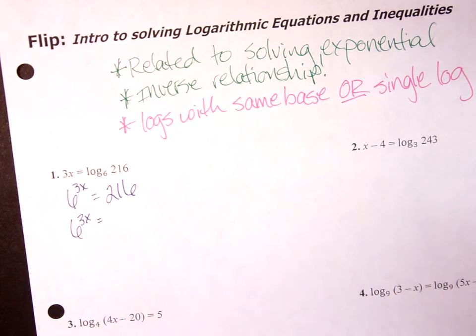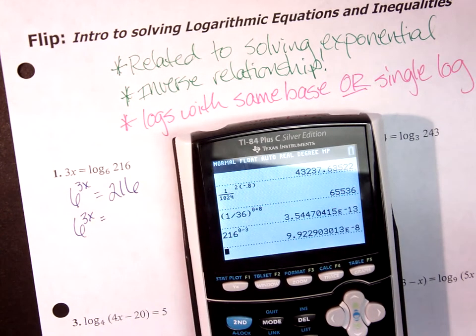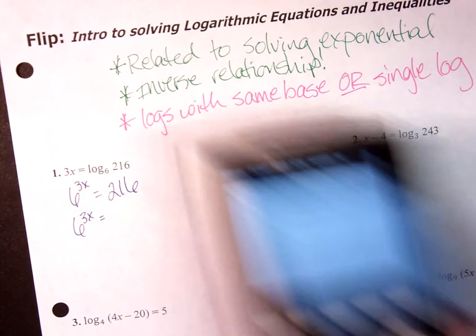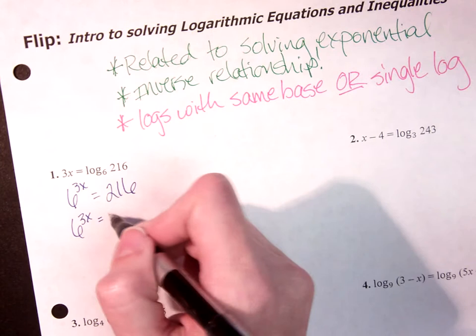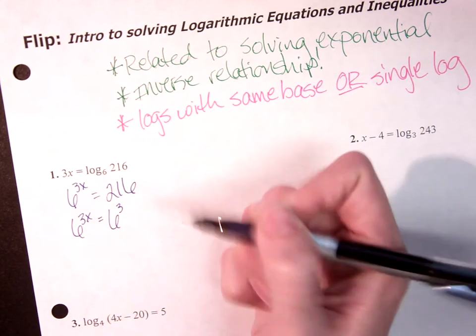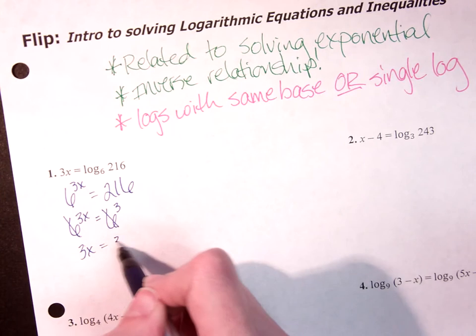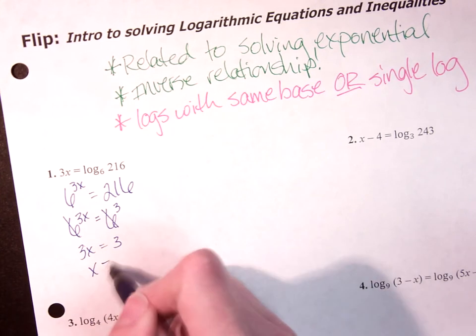We're going to keep 6 to the 3x, and then 216, remember we can divide down to get there or I can guess and check, and 6 to the third power is 216. My bases match, so now this just says 3x equals 3, which tells me that x equals 1.